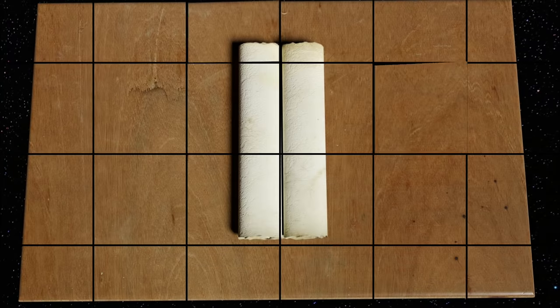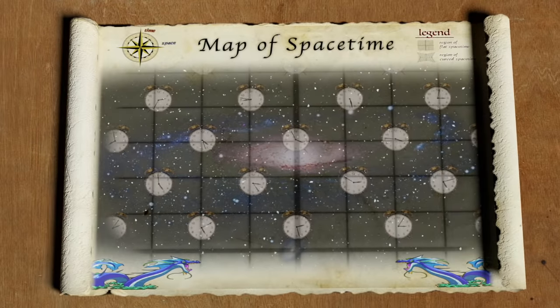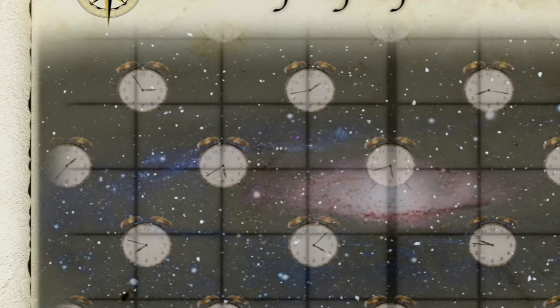So essentially, our space-time metric tells us how fast or slow clocks all across the universe are ticking with respect to our map user's local reference clock.